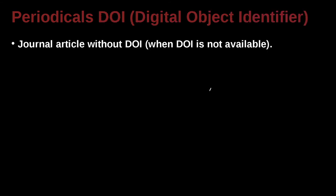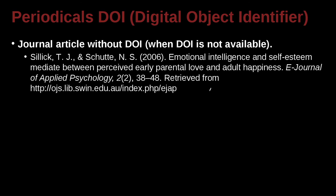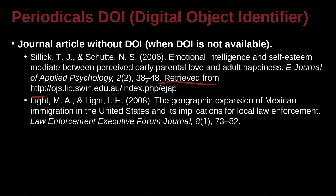For a journal article without a DOI, it may look something like this. You go ahead and put the HTTP at the end, after the period, and specifically write the words 'retrieved from,' then go ahead and give the address of the URL. Everything else should stay the same.